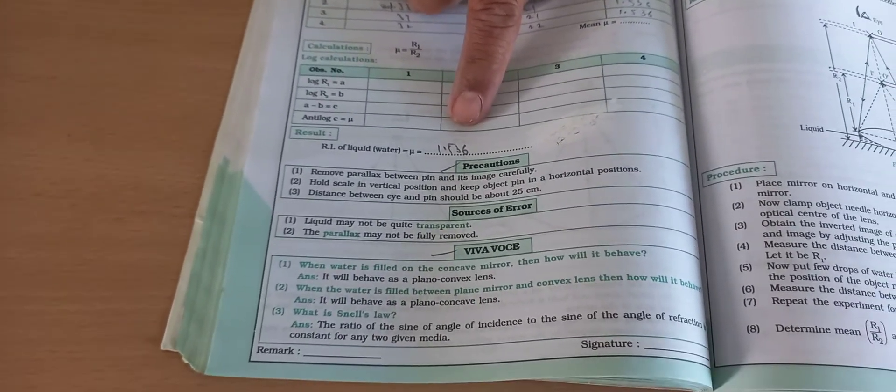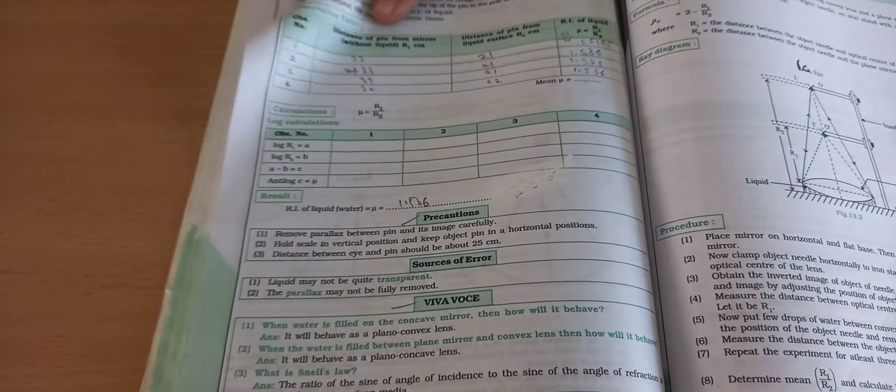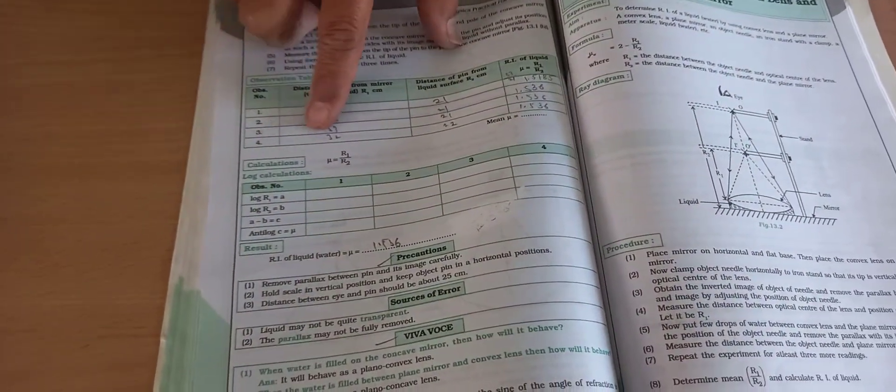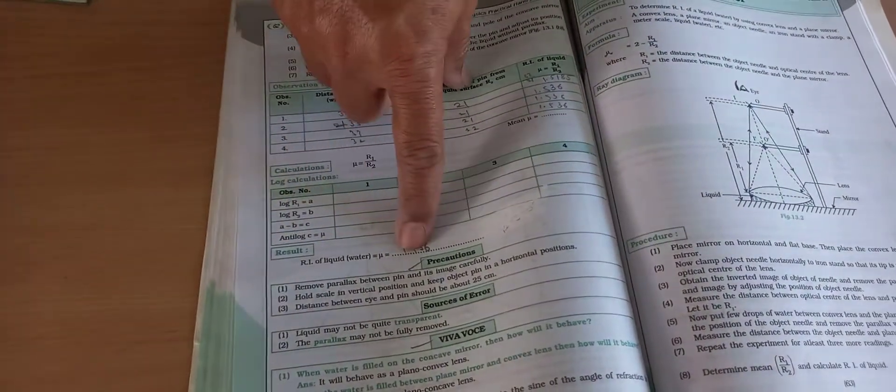This is our final answer. In your journal, write down the aim, apparatus, formula, both diagrams, observation table, calculation (at least one calculation), and the result. Don't write the procedure.